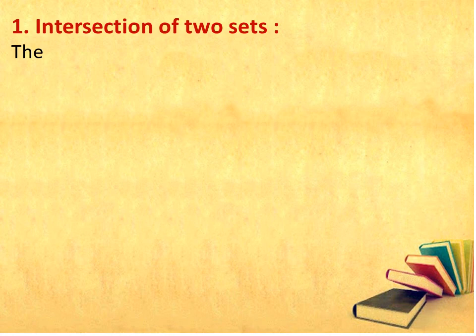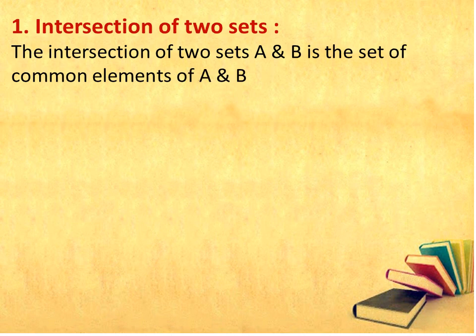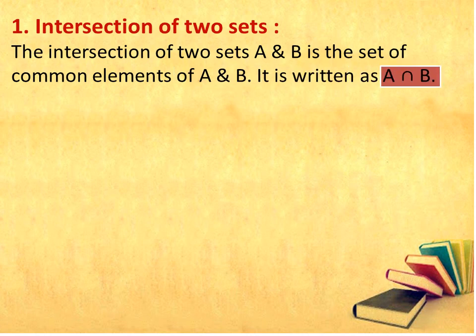Let us now study what do you mean by intersection of two sets. The intersection of two sets A and B is a set of common elements of A and B. It is written as A intersection B. Here, I have highlighted A intersection B. Please make a note of this.